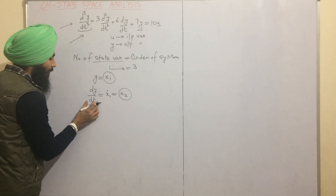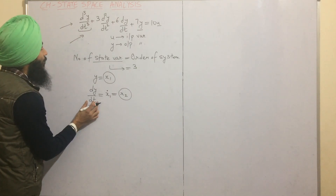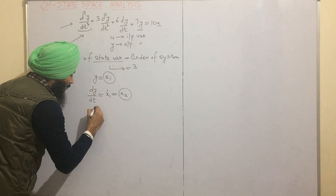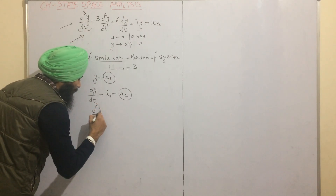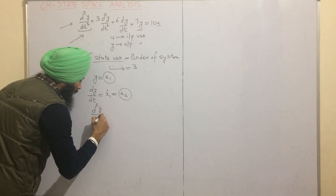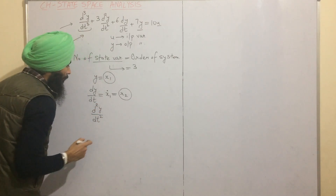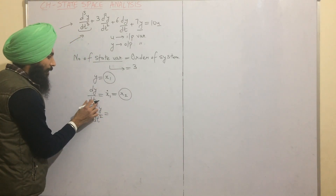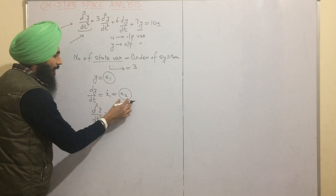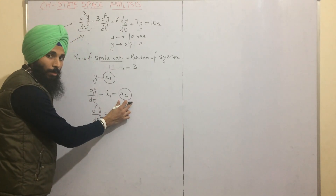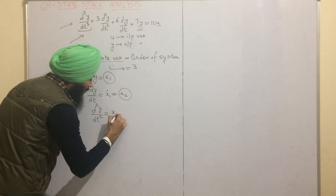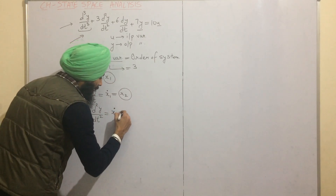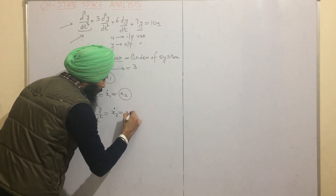Now dy/dt is again differentiated and written as d²y/dt². If dy/dt is differentiated, that means x2 is also differentiated. We write x2_dot and equate it equal to x3, the third state variable.